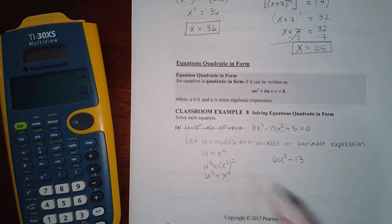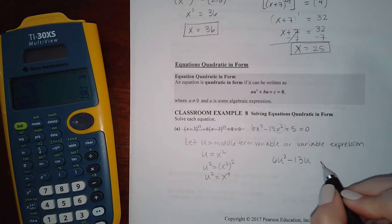And instead of x squared, I'm going to use u. So instead of x squared, we're going to use u, and then put your plus 5 equal to 0.